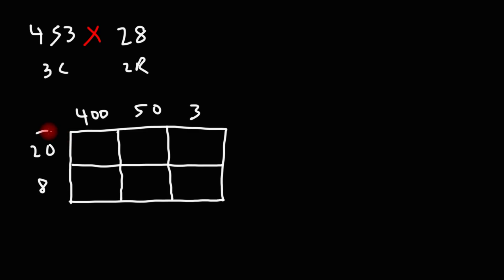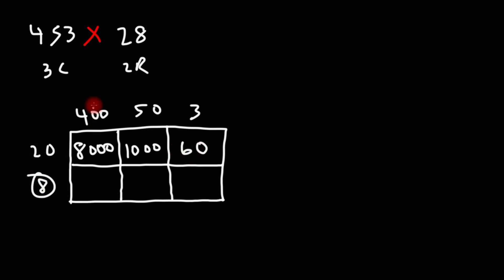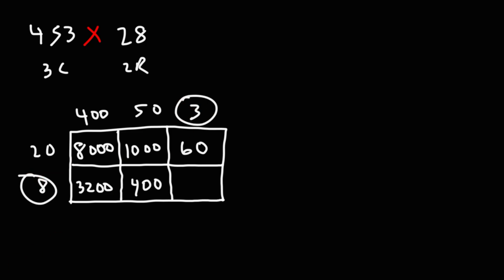Now let's multiply. What's 20 times 400? 2 times 4 is 8; add the three zeros, we get 8,000. 20 times 50: 2 times 5 is 10; add the two zeros, we get 1,000. 20 times 3: 2 times 3 is 6; add the zero, you get 60. Next we have 8 times 400: 8 times 4 is 32; add the two zeros, you get 3,200. Then 8 times 50: 8 times 5 is 40; add the zero, you get 400. And 8 times 3 is 24.